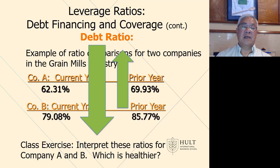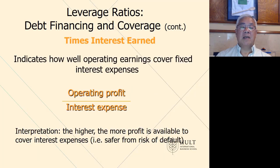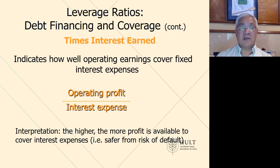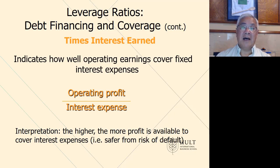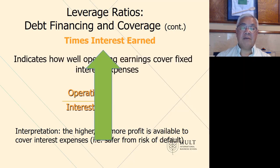Times interest earned (TIE) says how safely are you earning money to pay your interest. If this ratio equals one, interest expense exactly equals operating profit — all the money you make goes to pay interest, which is not good. We want TIE to be high because we want to be very safely above what we owe in interest. Higher is better for TIE.